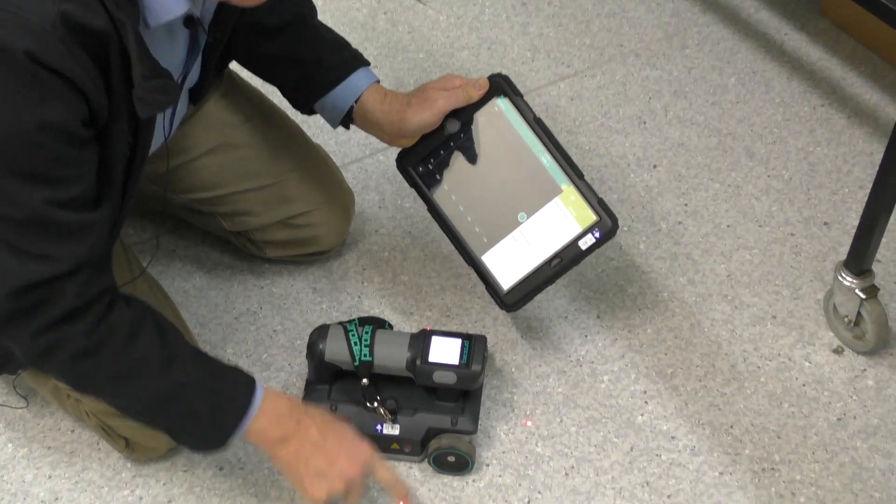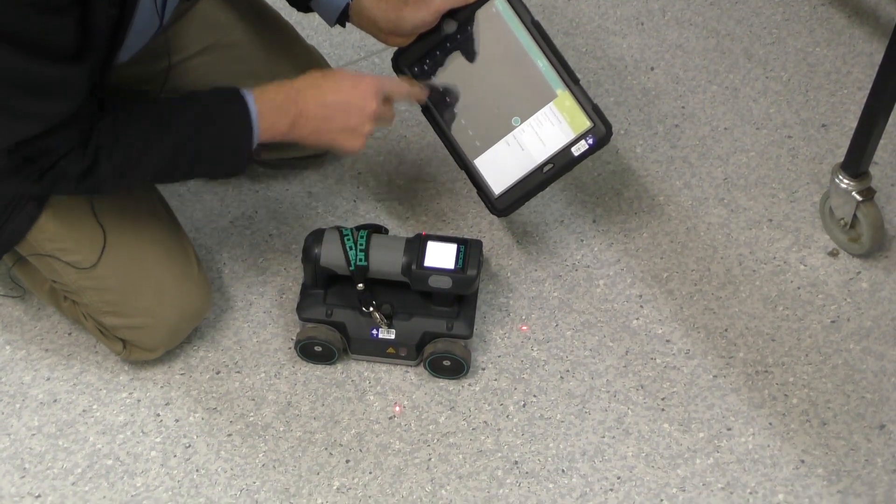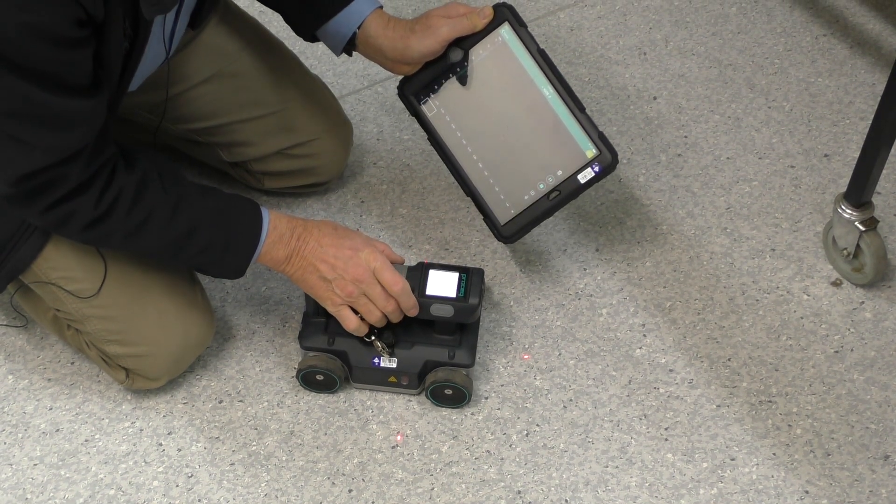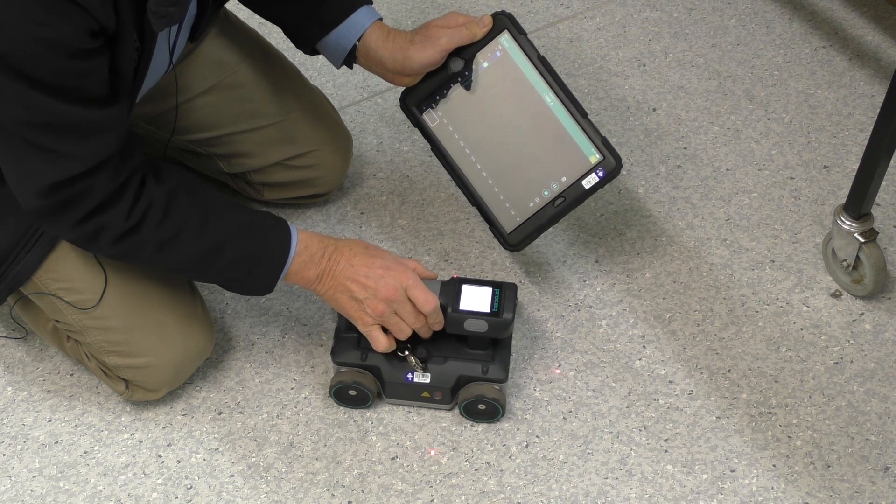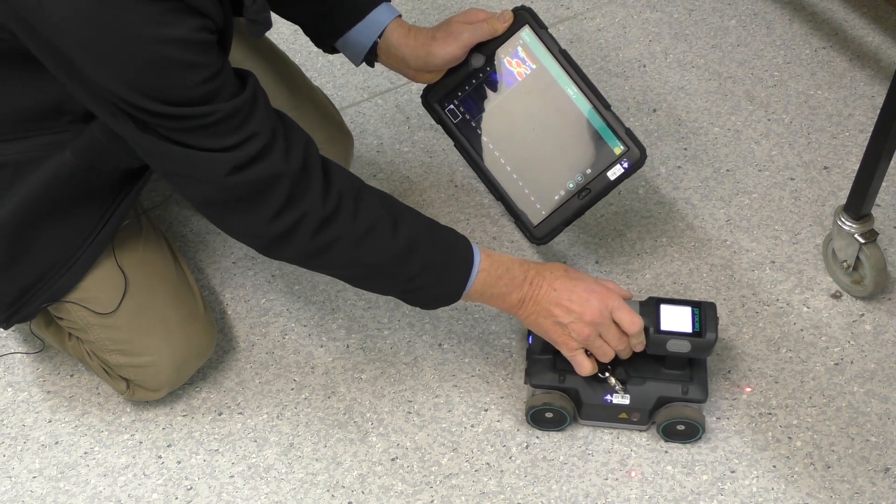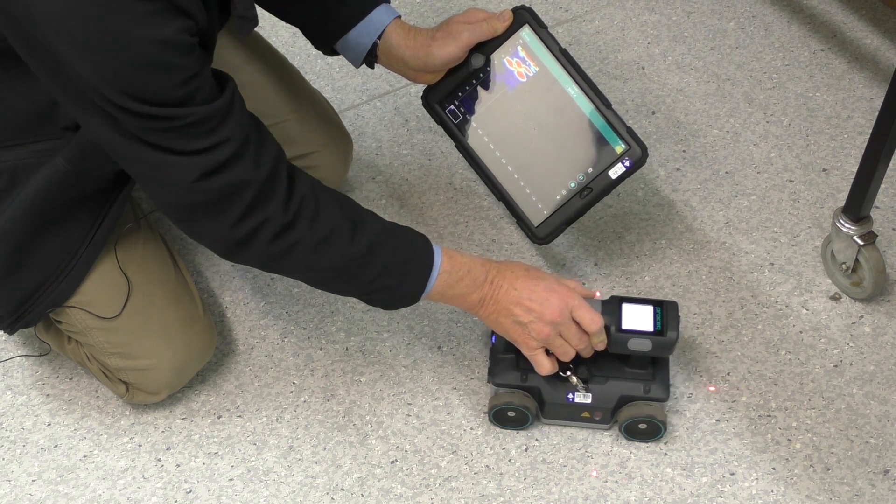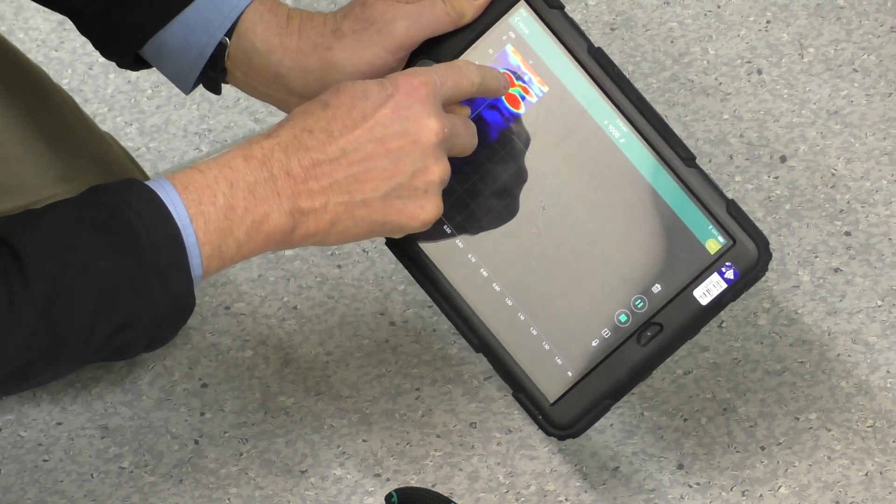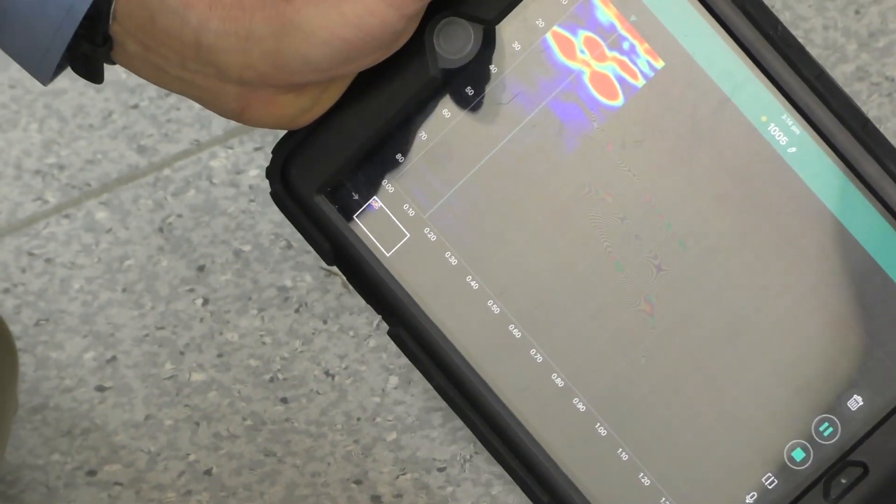Now we notice we've got these red dots. That's the point that we're actually looking at. Now if I hit this start button here, I now roll forward and you can see the reinforcing. So at around 10 centimeters depth is a piece of reinforcing.